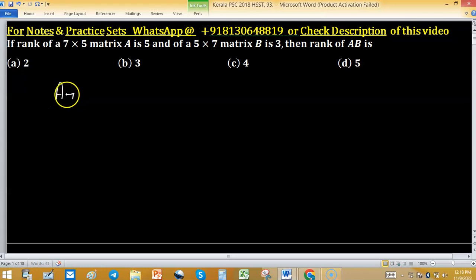If the rank of matrix A of size 7×5 is 5 and rank of matrix B of size 5×7 is 3, we have to find rank of AB.